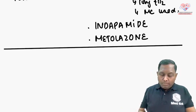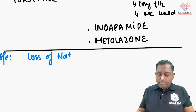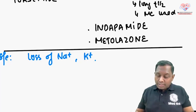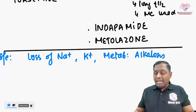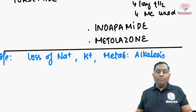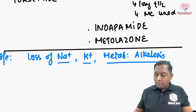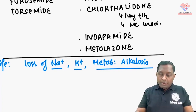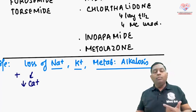Both loop and thiazide diuretics cause loss of sodium leading to hyponatremia, and loss of potassium leading to hypokalemia, and they can also lead to metabolic alkalosis. The diuretic causing metabolic acidosis was the carbonic anhydrase inhibitor. Loop diuretics additionally cause decreased calcium levels.